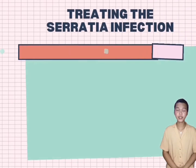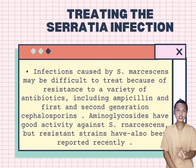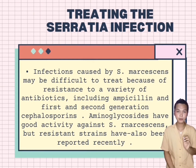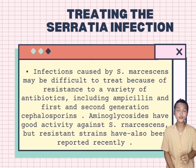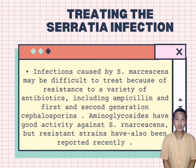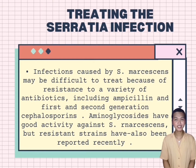How to treat Serratia infection? Infection caused by Serratia marcescens may be difficult to treat because of resistance to a variety of antibiotics, including ampicillin and first and second generation cephalosporins. Aminoglycosides have good activity against S. marcescens, but resistant strains have also been reported recently.